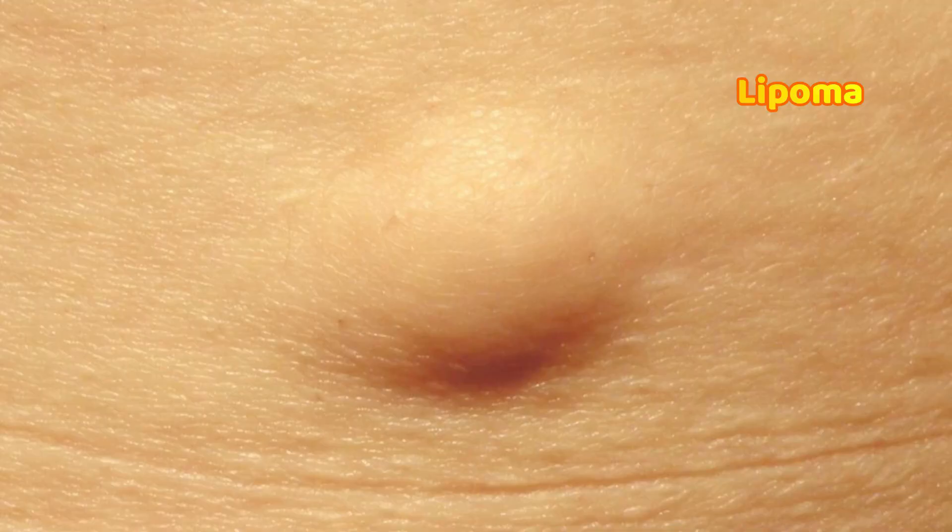You can also have a lipoma, which is basically a fatty tissue. It is usually a firm, soft structure which you can feel, and it's quite mobile and fluctuant as well.